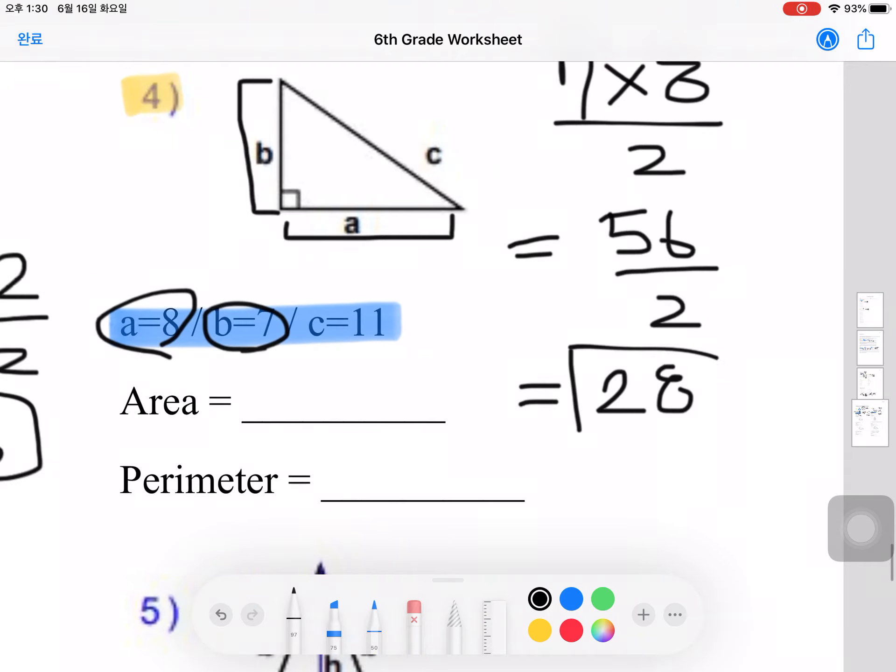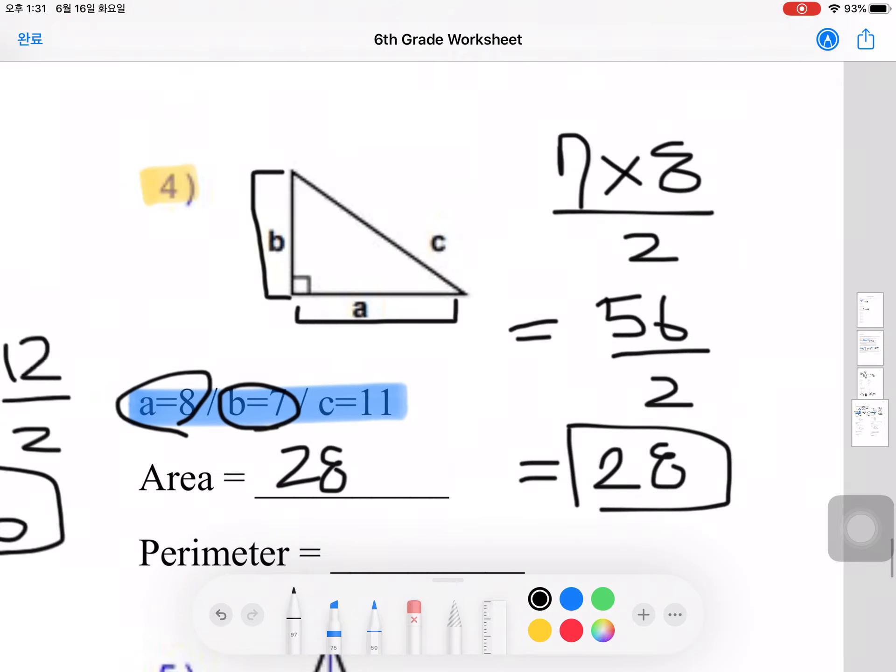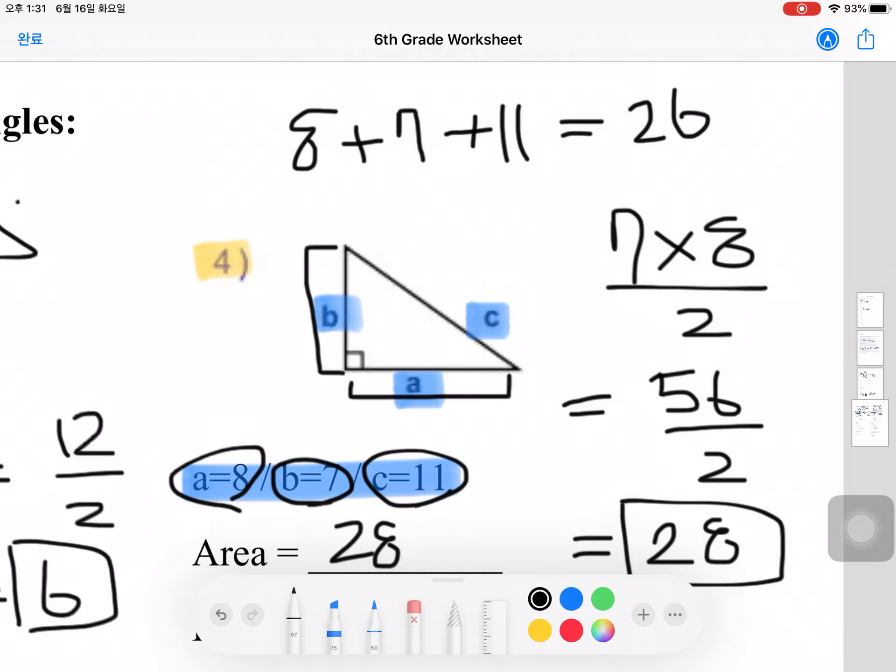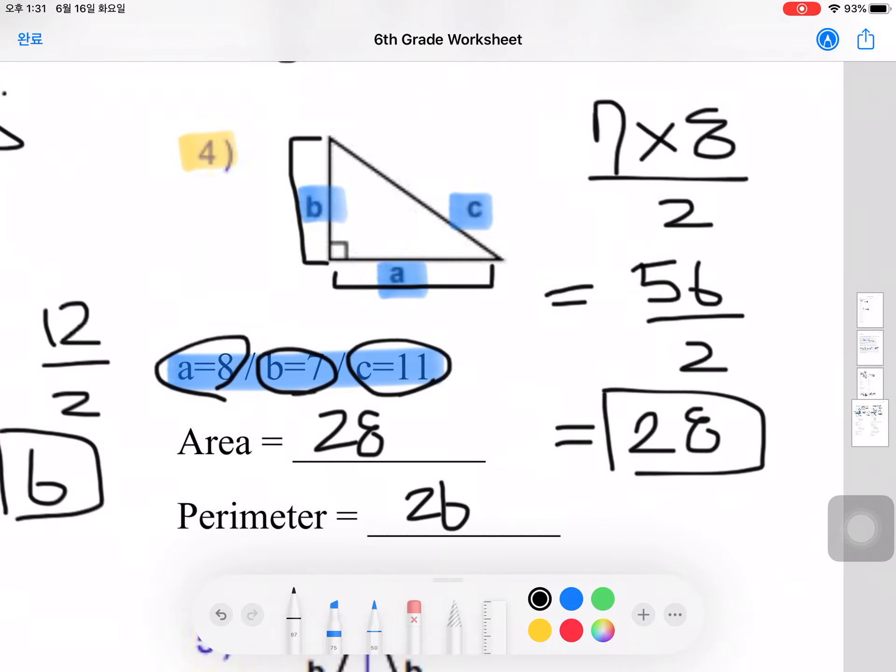Now to find the perimeter, we want to add A, B, and C together. So A was 8 plus B, which was 7, plus C, which is 11. If you add all of these together, we get 8 plus 7, which is 15, plus 11, which is 26. So your final perimeter would be 26.